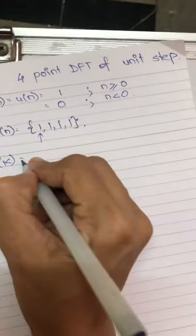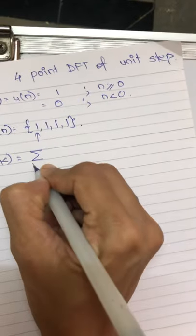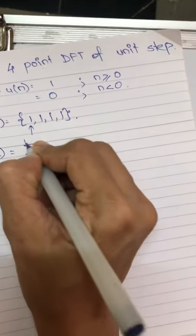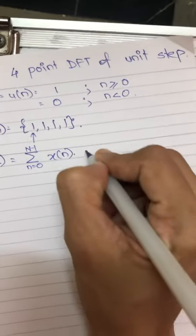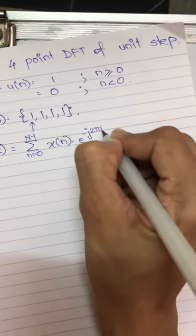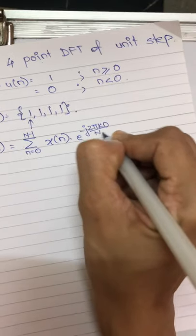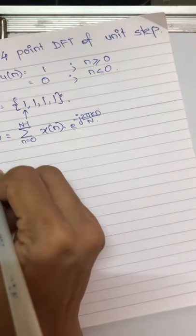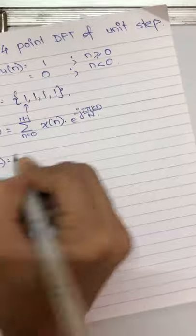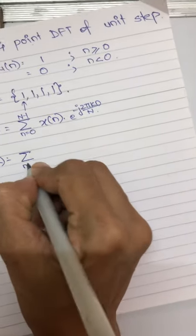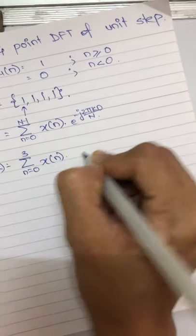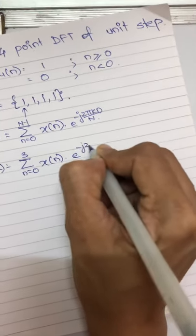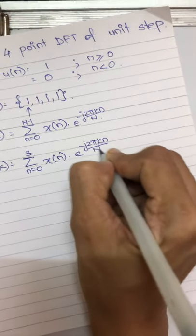Now let us write down the original expression first always. The first step always has to be the original expression as it is. Now let us modify the expression according to this: n equals 0 to 3, x(n) e raised to minus j 2πkn by n.